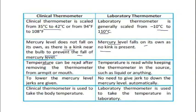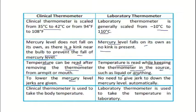For the clinical thermometer, temperature can be read after removing it from the source because of the kink, whereas for the laboratory thermometer, temperature must be read while keeping it in the substance. To bring down the mercury level in a clinical thermometer, you must jerk or shake it due to the kink. In the laboratory thermometer, the mercury level comes down automatically, which is why the thermometer must stay inside the liquid while measuring.